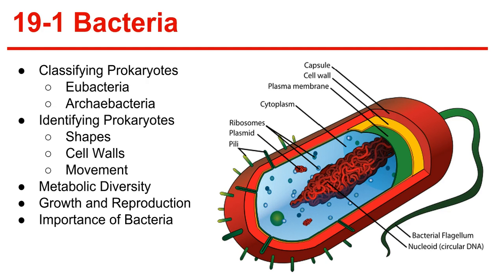Eubacteria are usually surrounded by a cell wall that protects the cell from injury and determines its shape. The archaebacteria lack the peptidoglycan of eubacteria and also have different membrane lipids. The DNA sequences of key archaebacteria genes are more like those of eukaryotes than those of eubacteria, and many archaebacteria live in extremely harsh environments.